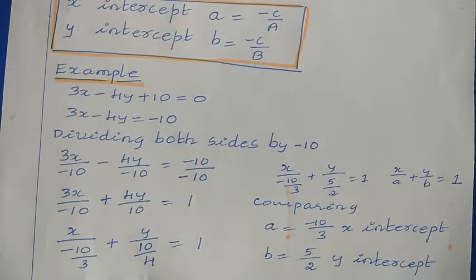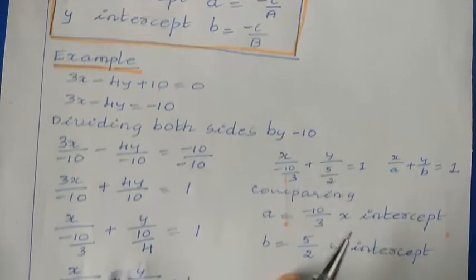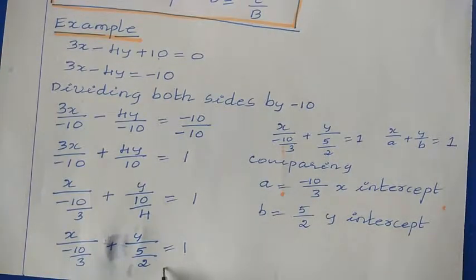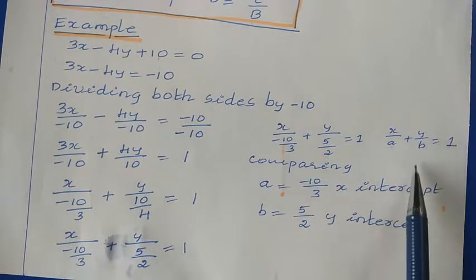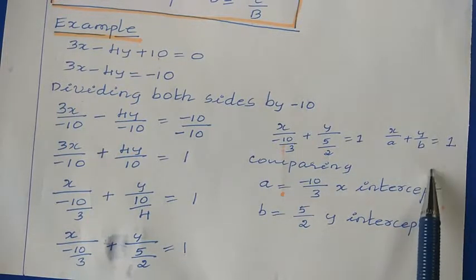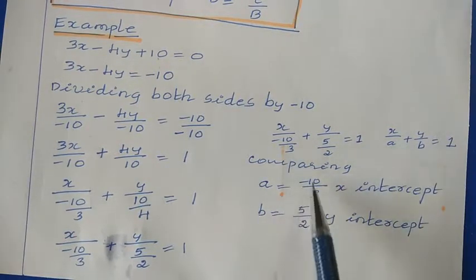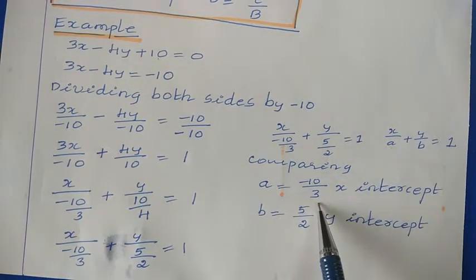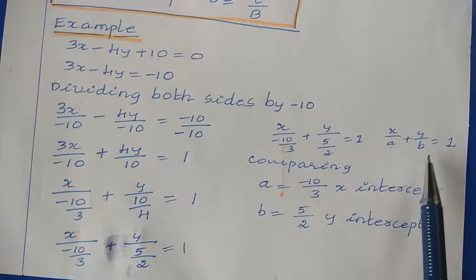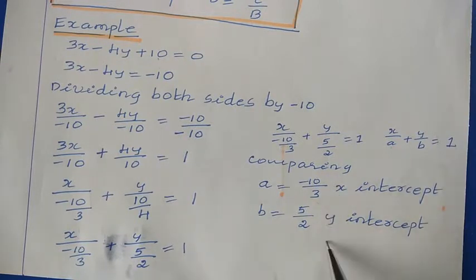Simplifying further, this becomes X divided by (minus 10 over 3) plus Y divided by (5 over 2) is equal to 1. Comparing with X divided by A plus Y divided by B is equal to 1, we get A is equal to minus 10 over 3, which is the X intercept, and B is equal to 5 over 2, which is the Y intercept.